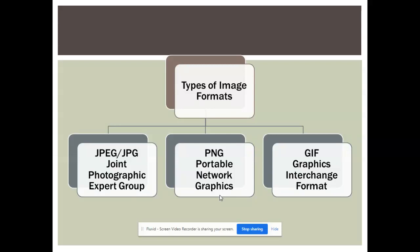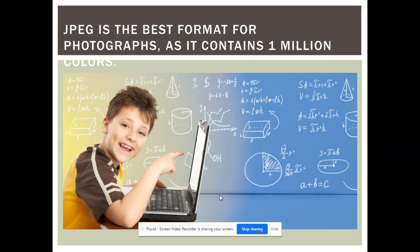JPEG is the best format for photography. If you click any photograph, it will be saved in JPEG format. This format contains millions of colors, so normal images are all JPEG type.